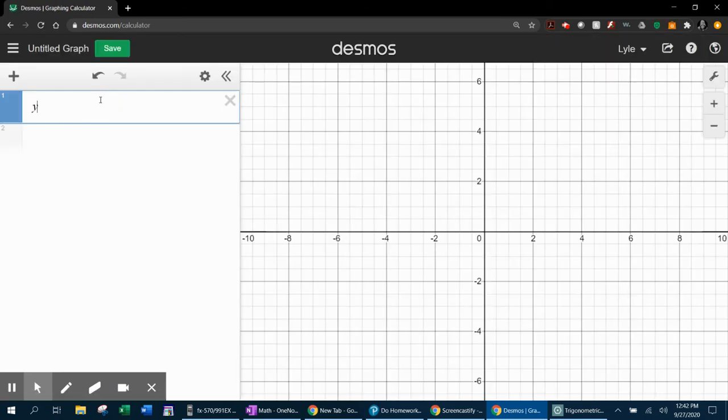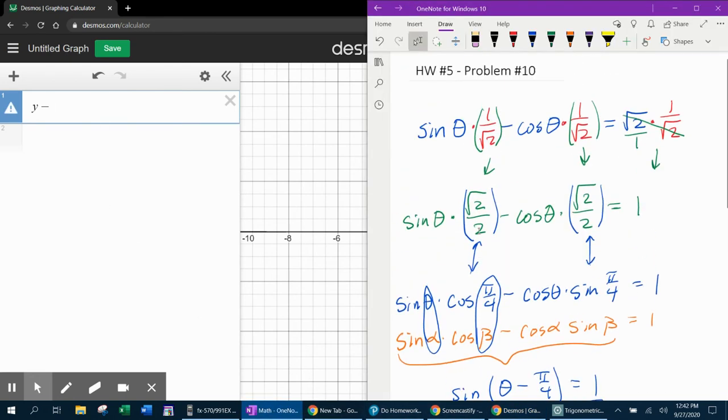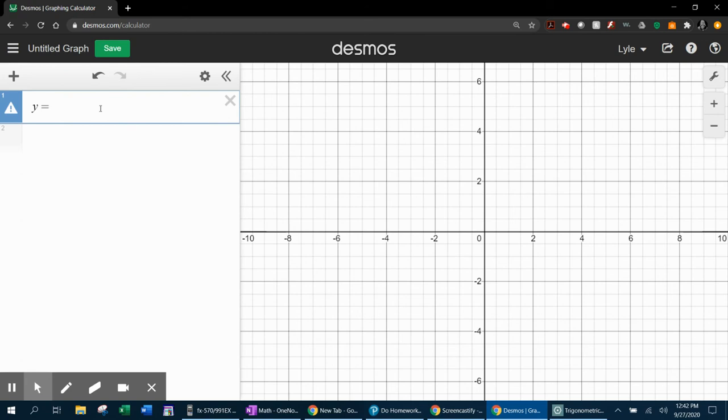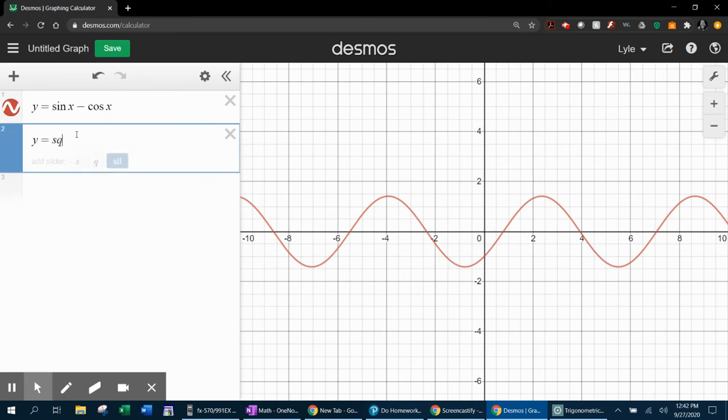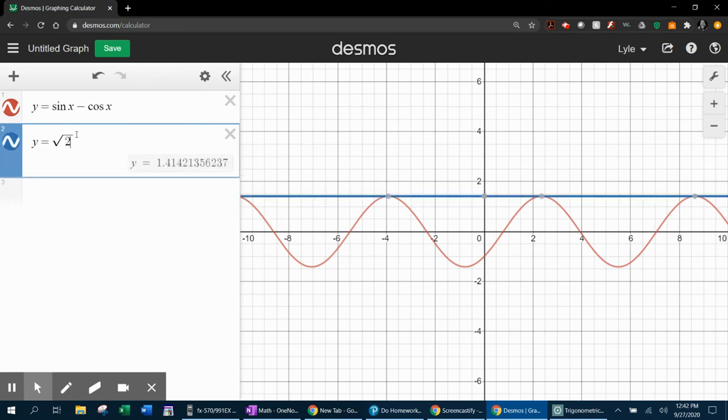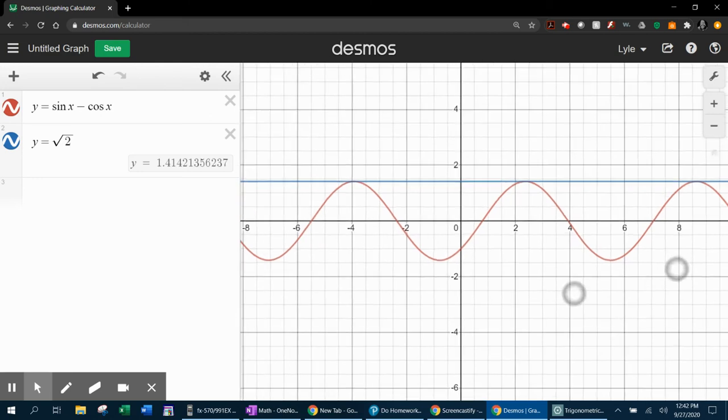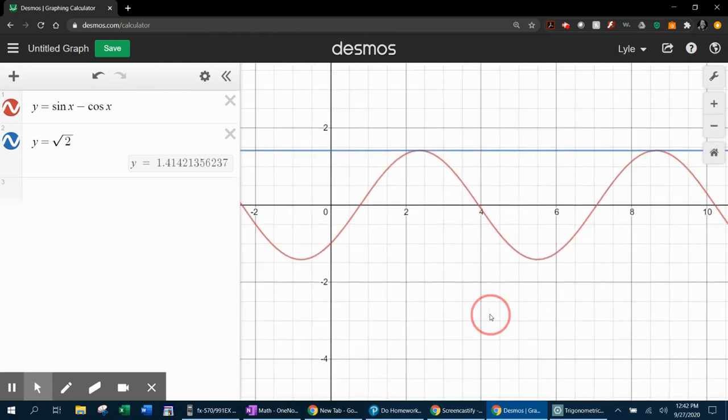Now to check this with Desmos, I want to say y equals, and I want to pull up the original problem, which was sine theta minus cosine theta. Y equals sine, we're going to say x instead of theta, minus cosine theta. And then what was that equal to? It was equal to square root of 2. Now, if we look at our graph and we zoom in zero to pi over 2, which is going to be somewhere here, we can see that there's only one intersection.